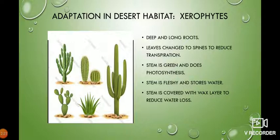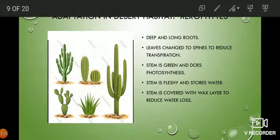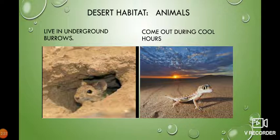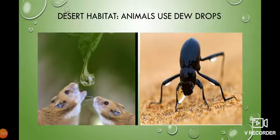What about the animals that live in the desert? They too have adapted. Most desert animals live deep inside burrows, which are very cool. They come out only during the cool morning or evening hours to hunt for food or search for water. During the hot daytime, they do not come out. There is also the interesting question of water — since there is no water in the desert, these small animals, mostly insects and reptiles, generally depend on dew drops.